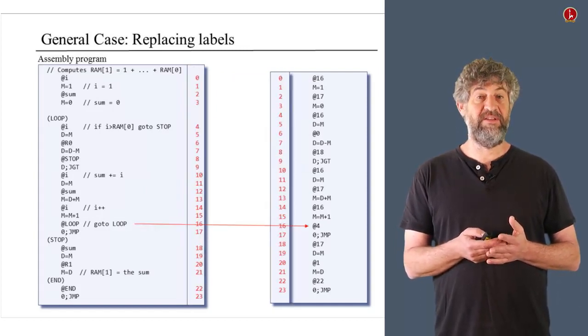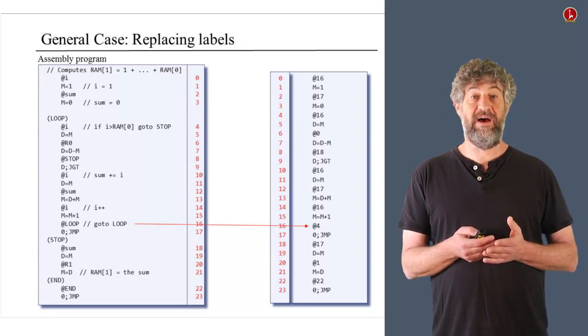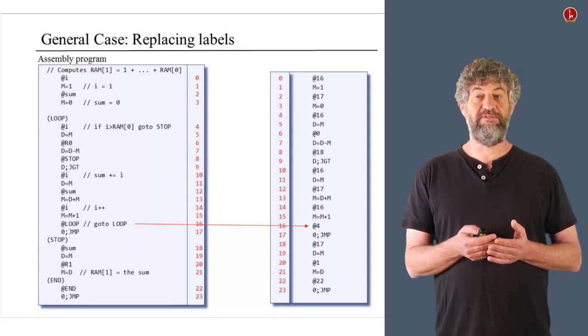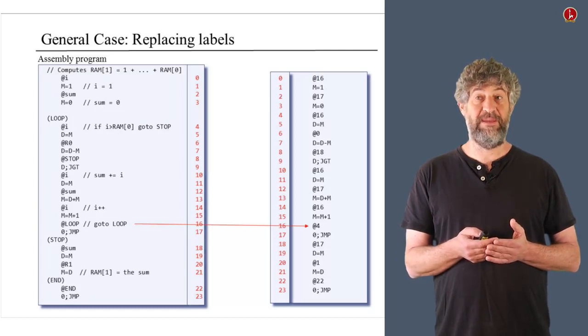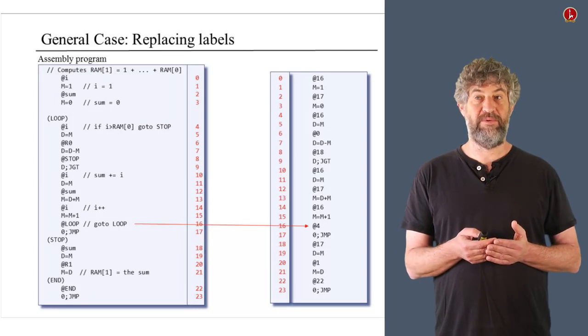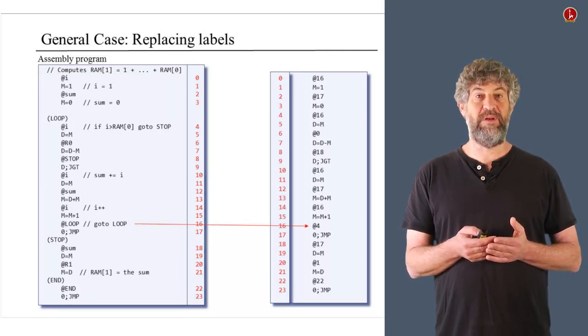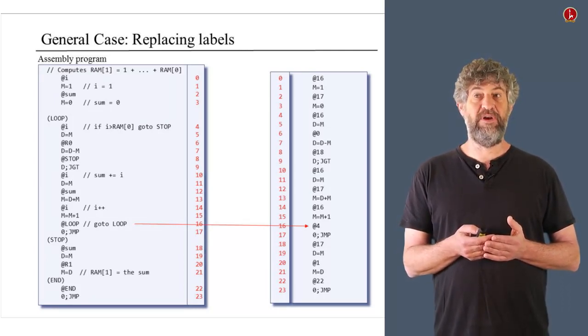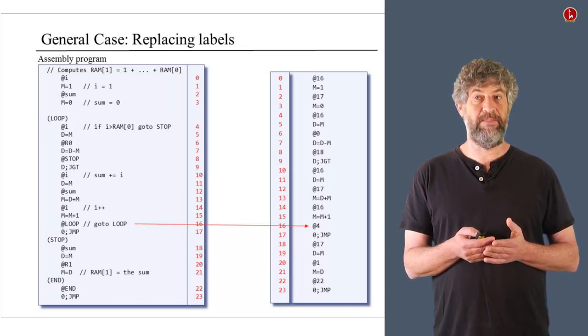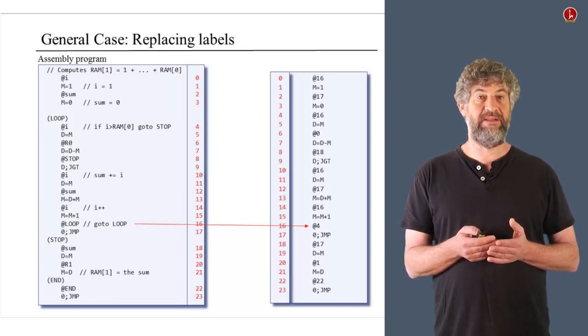And the third type of thing is whenever you see a label in a program, you have to figure out first what is the address of the label. And then anytime you see a reference to that label, you need to put that address. So for example, look at the loop label in this program. If you look at it, it's just before the command number four in the program. Just before command at i.